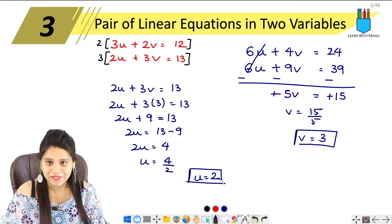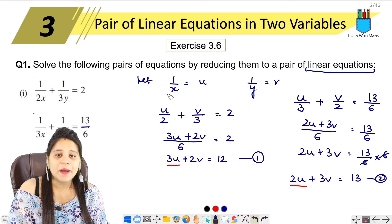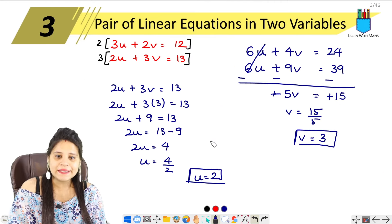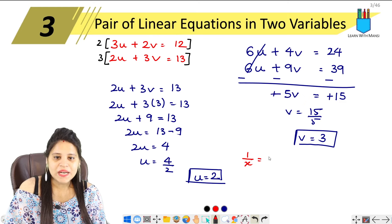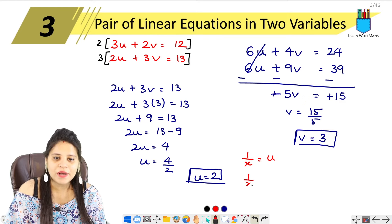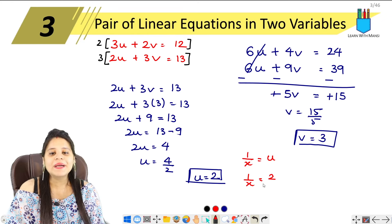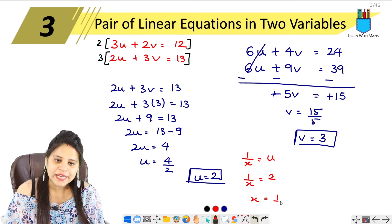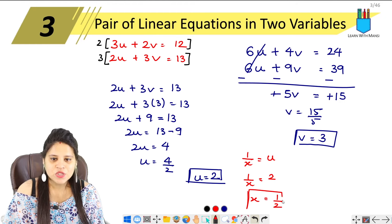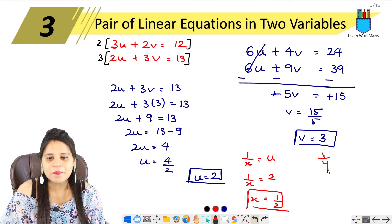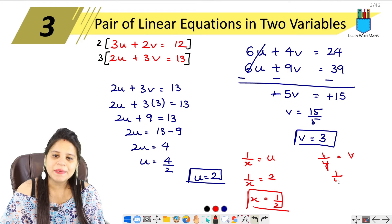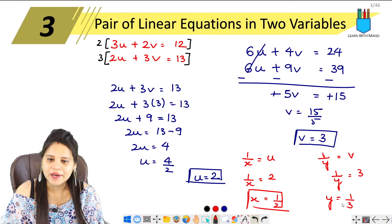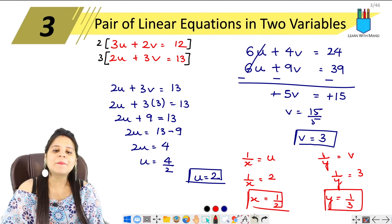So, now, here we have the value of u and v, which is 2 and 3. Now, this is u and v. Finally, we have the value of x and y. So, I can write, here we can write. 1 upon x is equal to u. So, 1 upon x equals to u is 2. So, now, if I cross multiply this here, if I have the value of x, I have the value of 2 here. So, x will be 1 upon 2. So, x's value is 1 upon 2. Similarly, 1 upon y is equal to v. That means, 1 upon y is equal to 3. So, if we send here y to y, then y equals to 1 upon 3. So, here we have the value of x and y. We have the value of 1 upon 2 and we have the value of 1 upon 3.